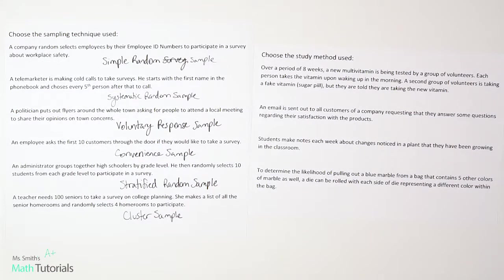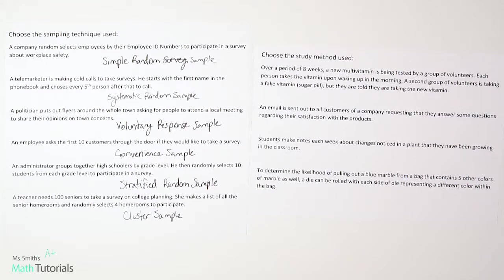Now we choose the study method used, thinking about observations, surveys, experiments, and simulations. The first example: over a period of eight weeks, a new multivitamin is being tested by volunteers — each person takes the vitamin upon waking up. A second group of volunteers takes a fake vitamin, a sugar pill, but they're told they're taking the new vitamin — that's the control group. That sounds like an experiment, and it is.